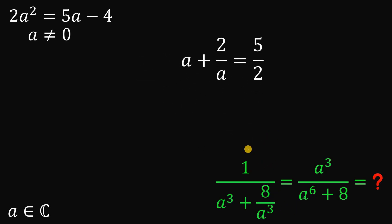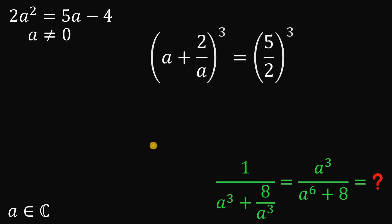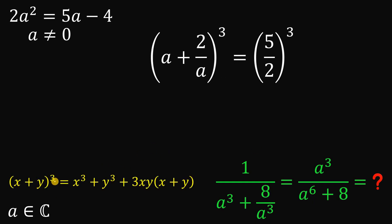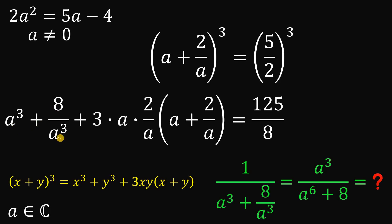Now we cube both sides. Using the identity (x + y)³ = x³ + y³ + 3xy(x + y), the left side expands as: a³ + 8/a³ plus 3 times (a)(2/a) multiplied by (a + 2/a), equals (5/2)³ = 125/8.